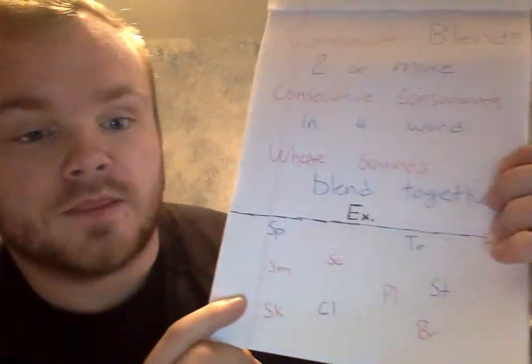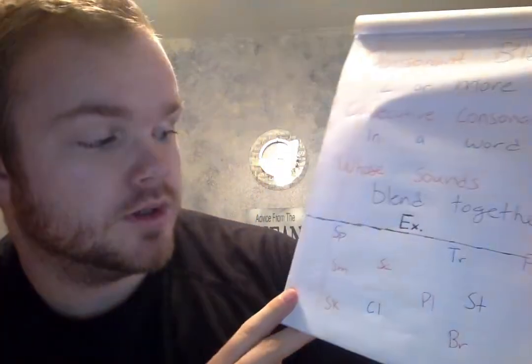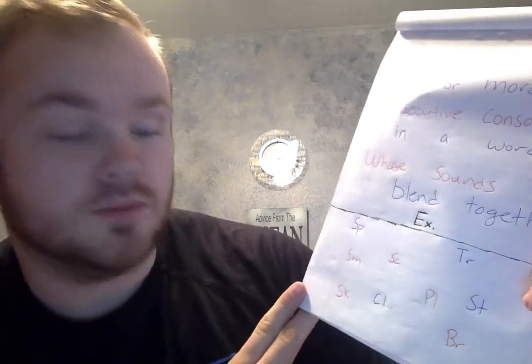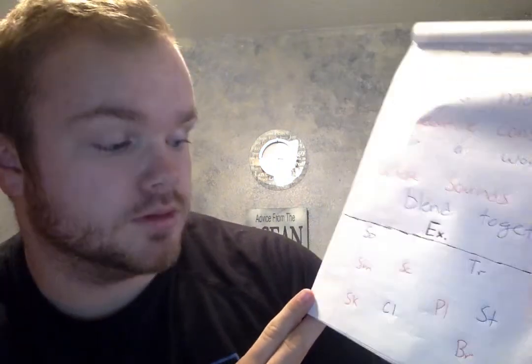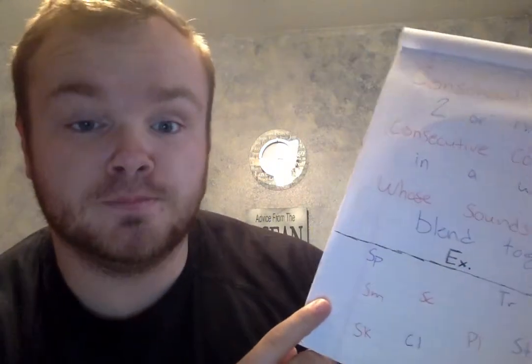There are some examples at the bottom — with SP being 'sp', PL being 'pl', or SM being 'sm'. We're going to be working through that, making different words with different consonant blends. Some of them are going to be silly words as we go through this strategy.